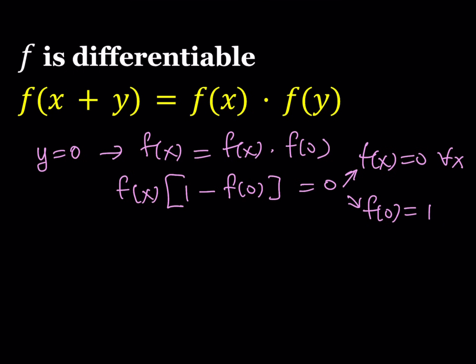For the time being we're going to ignore the first solution, because that just tells us that if f of x is always 0 then this works — you can clearly see that. Let's focus on the second one where f of 0 equals 1. This is good to know because we're going to use it in our equations.